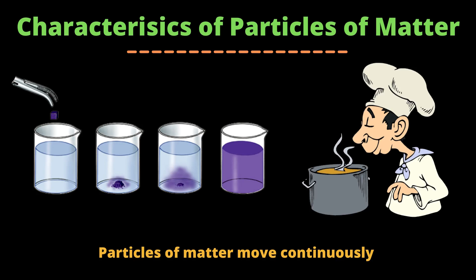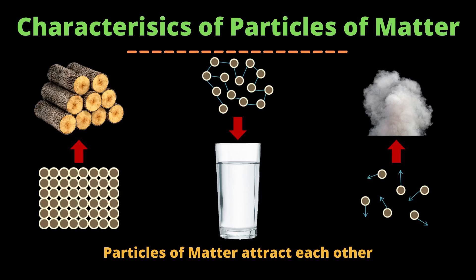The third characteristic of particles of matter is that particles of matter attract each other. Particles of matter have a force acting between them that keeps the particles together. This force of attraction varies from matter to matter. In solids the force of attraction between particles is maximum, in liquids it is less than solids, and in gases it is minimum.